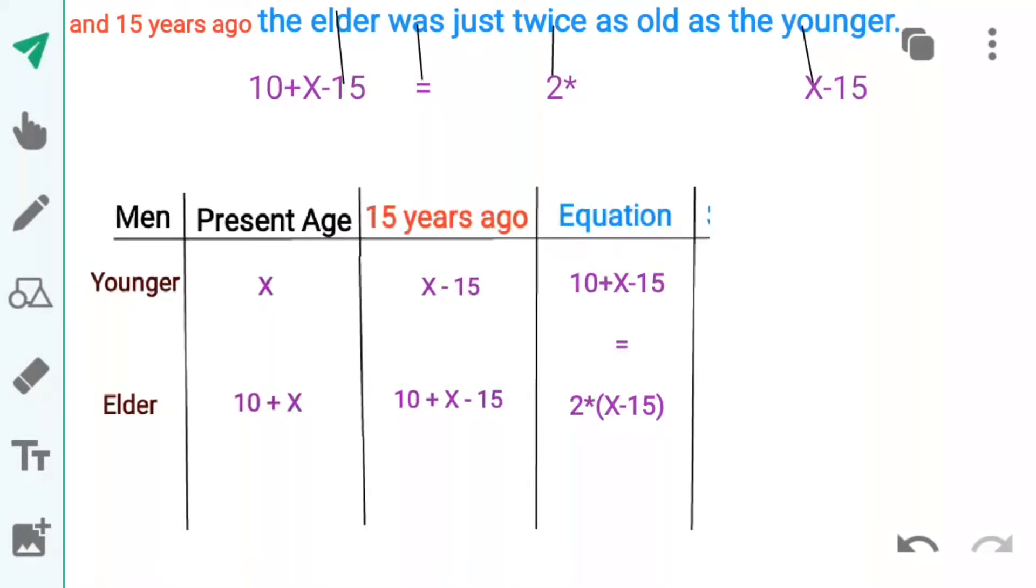Ab isi statement ke blue part se equation banayengge. The elder was just twice as old as the younger. Pehle elder ki age 10 plus x minus 15 likhengge. Was means equals to. Twice means 2 into. Kis se younger ki age se jo hai x minus 15. Ab is equation ko meinne equation box mein likh liya hai.